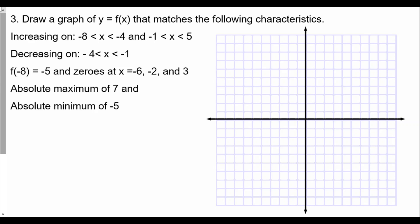So f of negative 8 — going over to x equals negative 8 — we have a y value of negative 5, so the point is at negative 8 comma negative 5. We're going to make that a big point. And we also have a zero at negative 6, so negative 6 comma 0 is one point.